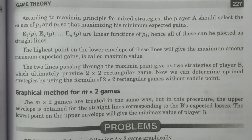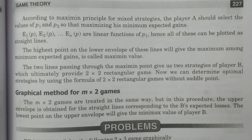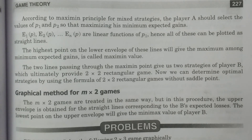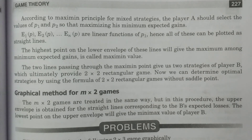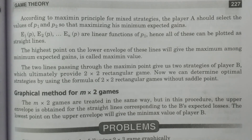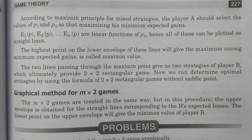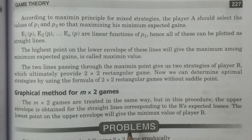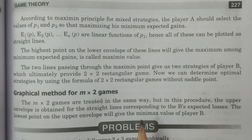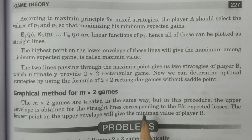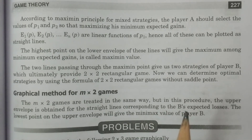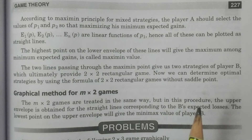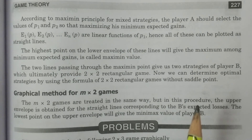The game is now converted into a 2×2 rectangular game without a saddle point. Using the standard formula for 2×2 games, we calculate p1 and p2 for Player A, and q1 and q2 for Player B's two remaining strategies. From this we obtain the optimal strategies of both players and the value of the game.